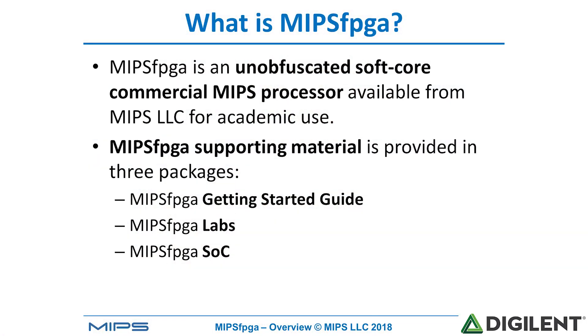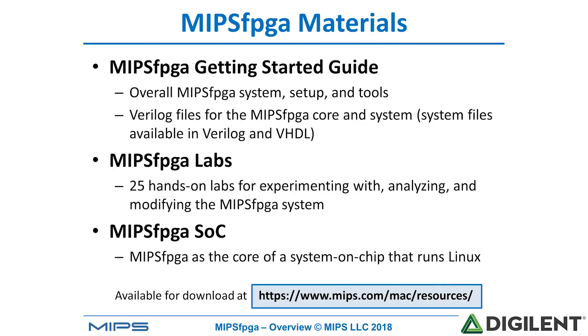So what is MIPS FPGA? It's an unobfuscated soft core processor available from MIPS LLC for academic use. We provide supporting materials in three packages: the Getting Started Guide, labs, and the system on chip package. The Getting Started Guide provides the tools for getting MIPS FPGA up and running and the core itself — the Verilog files for the core and the system. The labs package contains 25 hands-on labs for experimenting, analyzing, and modifying the MIPS FPGA system. The final package is the MIPS FPGA system on chip package that allows you to run Linux on the MIPS FPGA system.